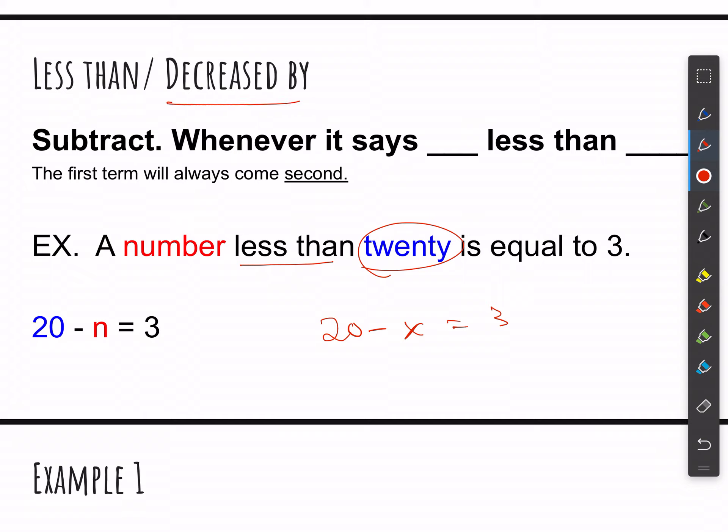Decreased by. So if I said a number decreased by 20 is equal to 3, it means the same thing. Decreased by. So some number. Sorry. It doesn't mean the same thing. If I said a number decreased by 20 is equal to 3, then it would be a number decreased by 20 equals 3. So notice how less than and decreased by change the order here. And order is very important. So just be mindful of that, you guys. A number less than something, make sure that the second thing comes first. If it says decreased by, then the order just stays the same.